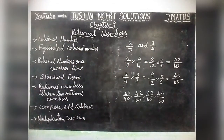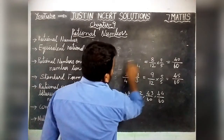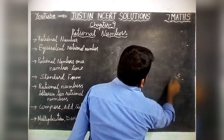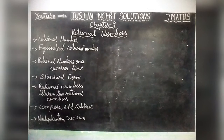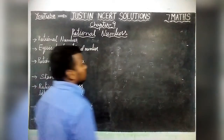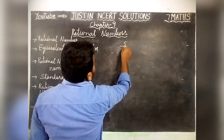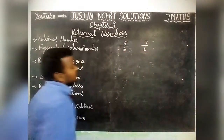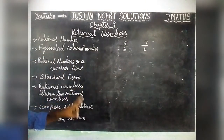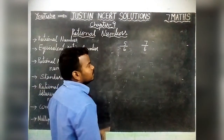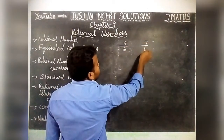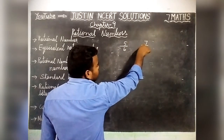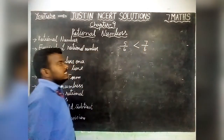Next, we compare and subtract Rational Numbers. For comparison: take 5 by 6 and 7 by 6. When the denominators are the same, we can directly compare the numerators. Numerator 7 is the greatest one, so 7 by 6 is greater than 5 by 6.